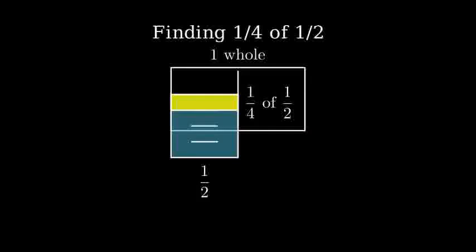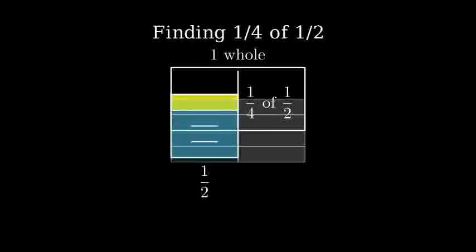Let's understand why this is one-eighth of the whole. If we count all the pieces in our original rectangle, we've divided it into eight equal parts, four pieces on each side. Our shaded region represents just one of these eight pieces, so it must be one-eighth of the whole.